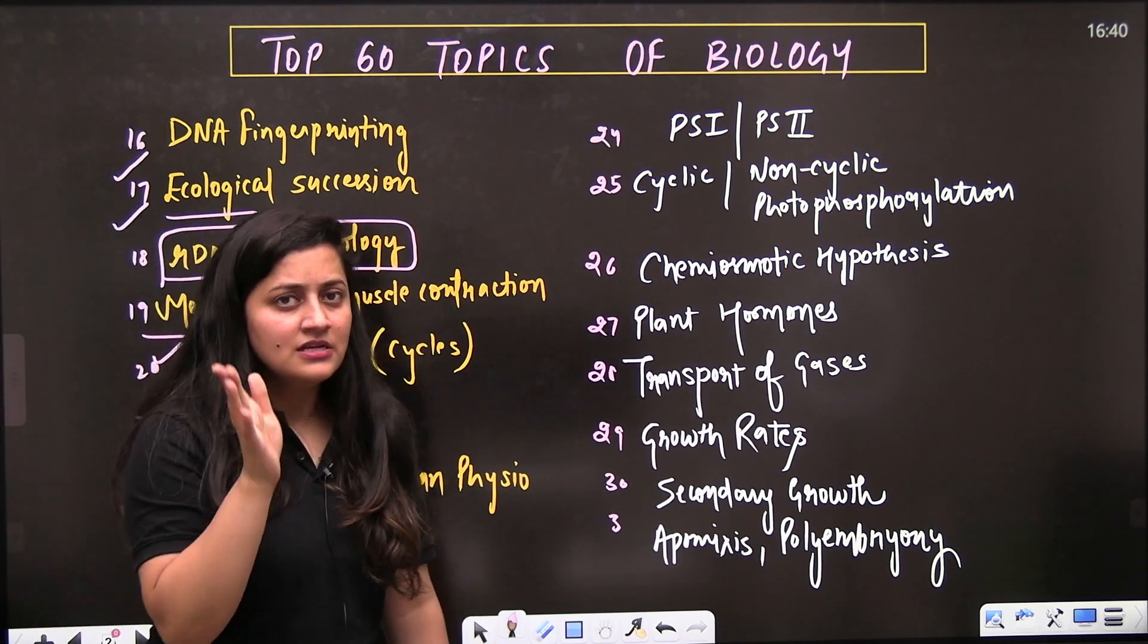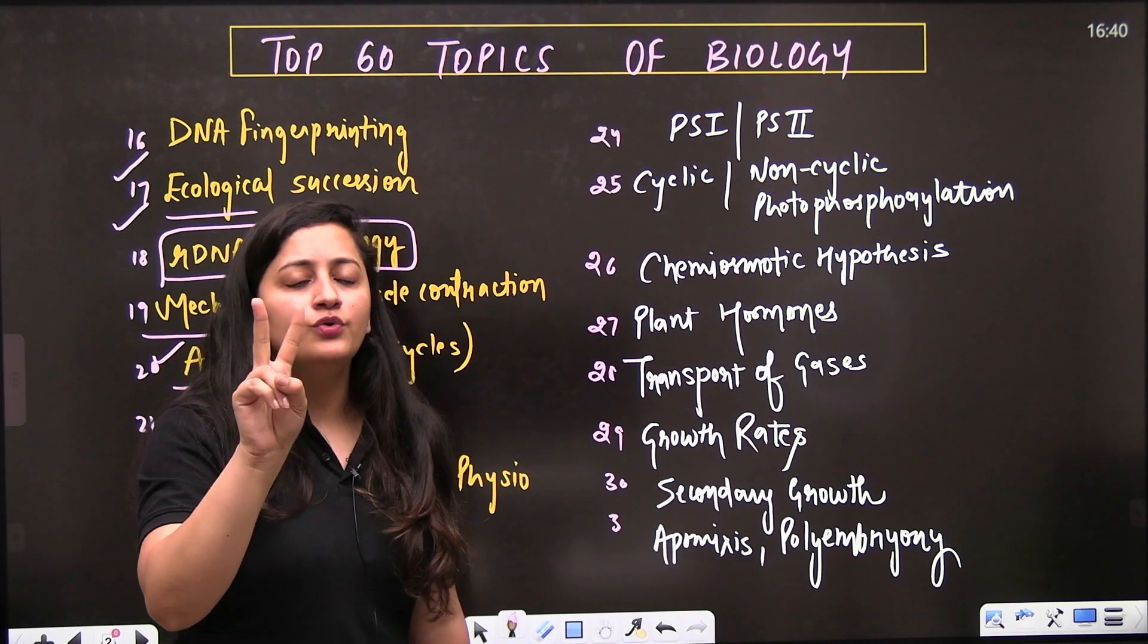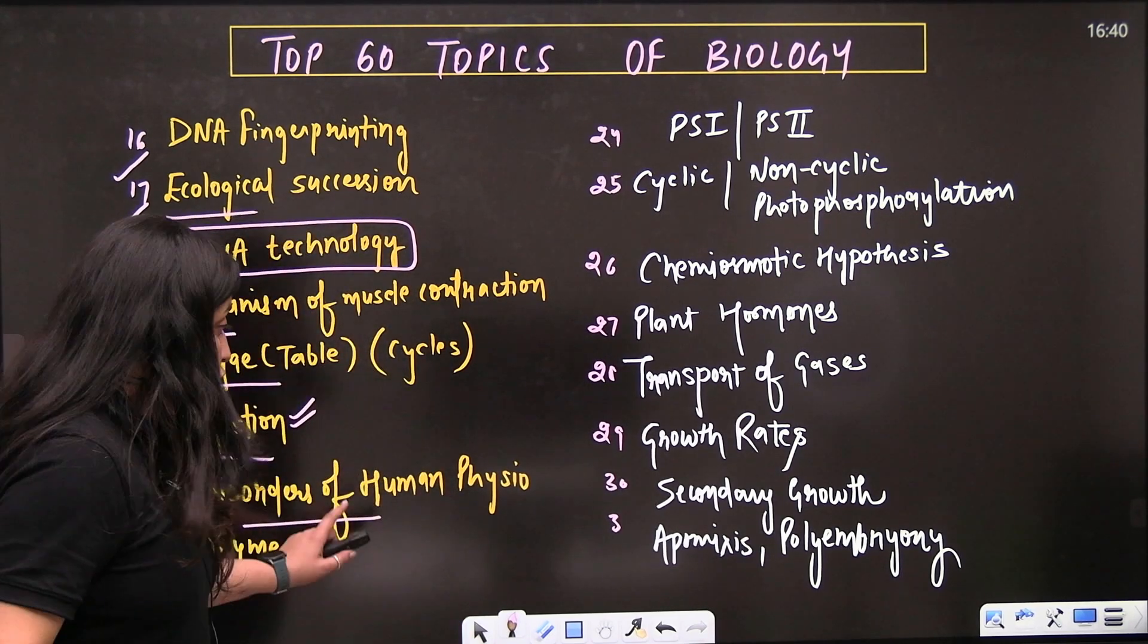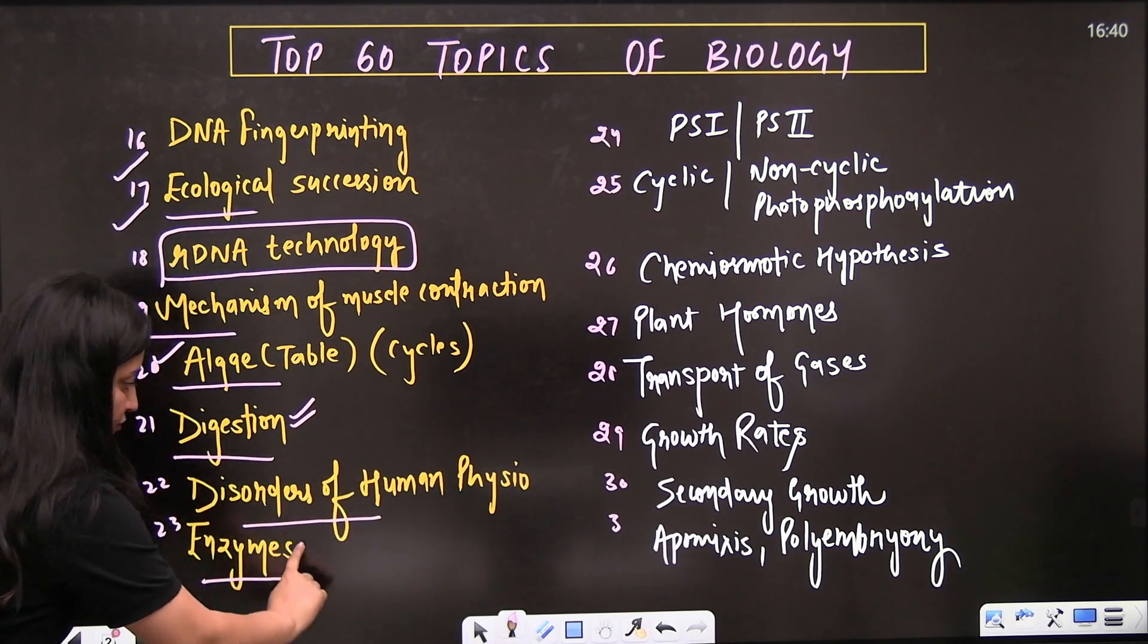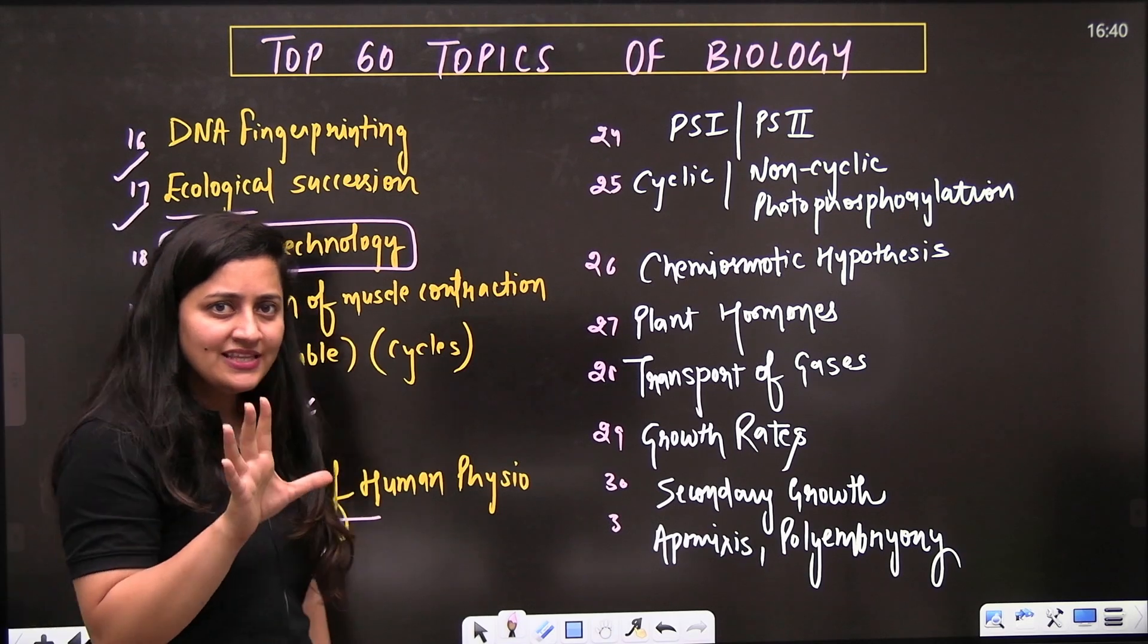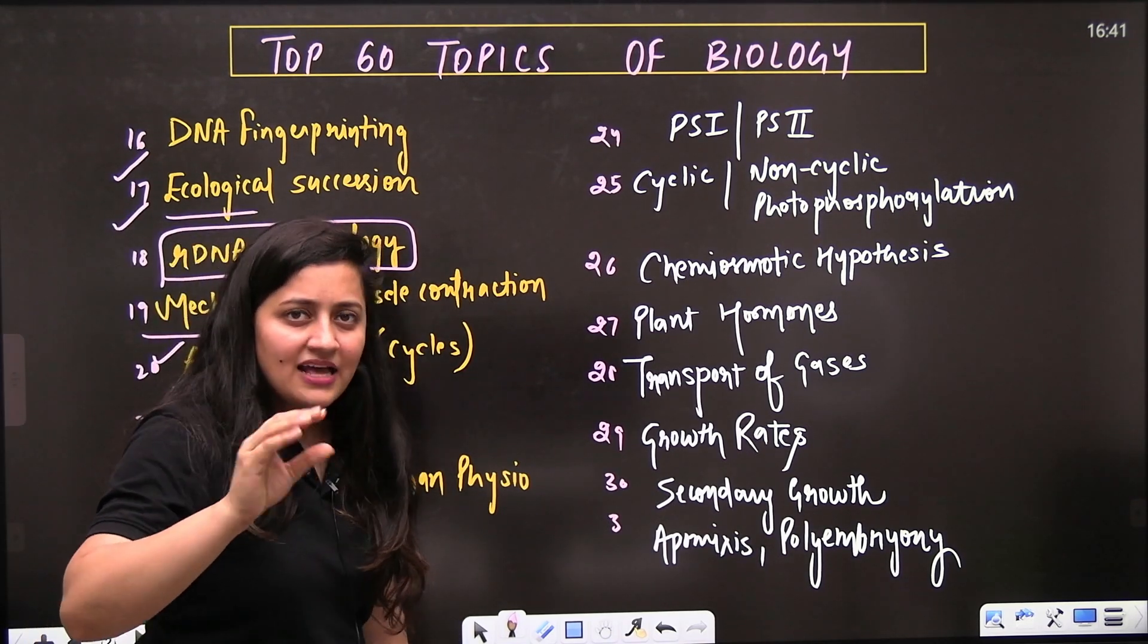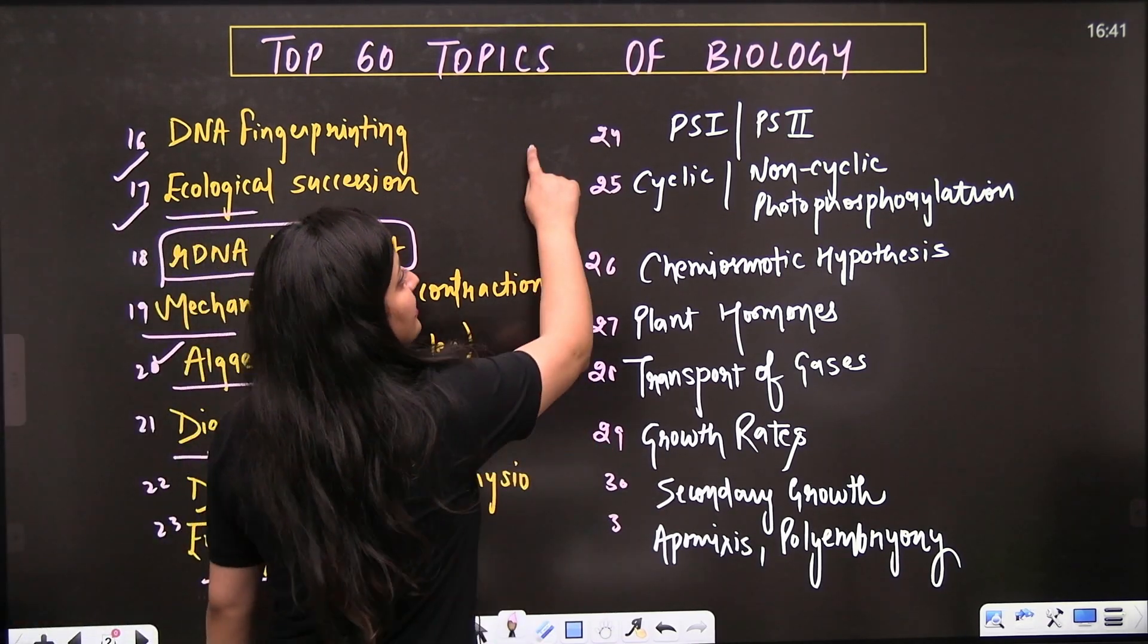Then disorders of human physiology - for disorders just revise NCERT. One or two disorders will definitely be there in the final NEET exam, so do revise them, only from the NCERT. Then comes the enzymes from the biomolecule chapter - just read the enzymes, prosthetic group, cofactor, the mechanism. Enzyme part is very important from the chapter biomolecules.